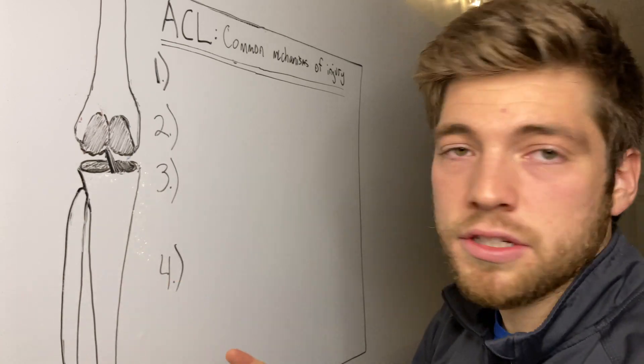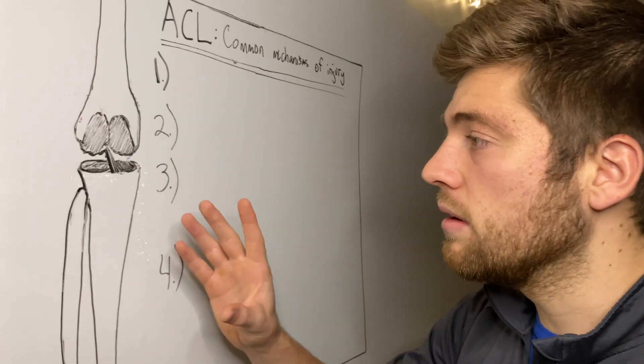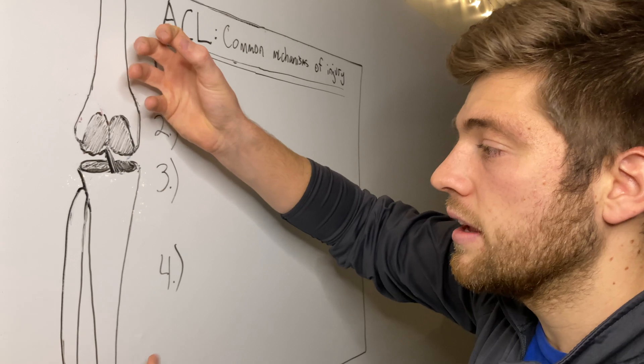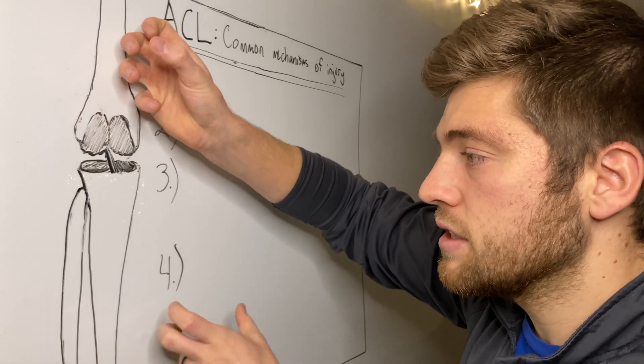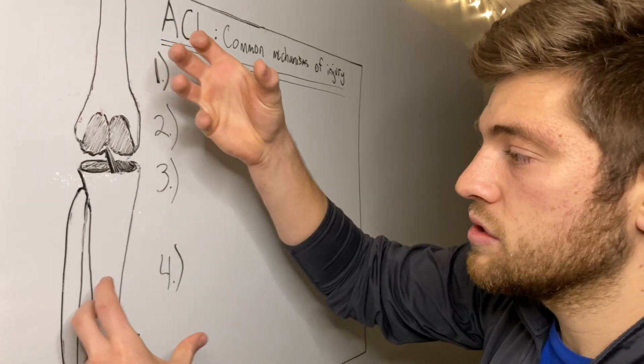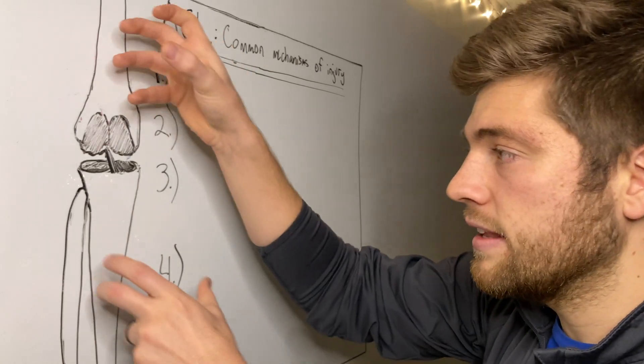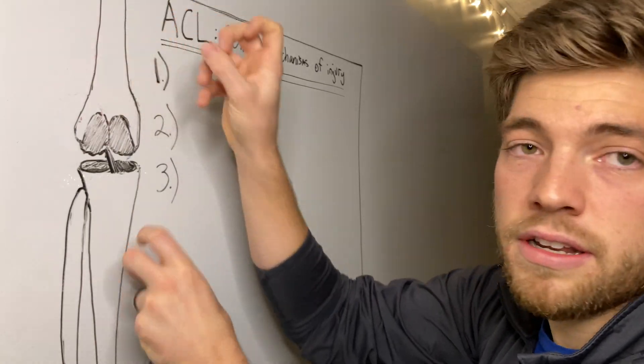So that's one of its main things, but it also resists the extreme of all motion. So it's going to be taut in the extreme of varus, the extreme of valgus, and the extreme of extension, and the extremes of any rotation at the knee.